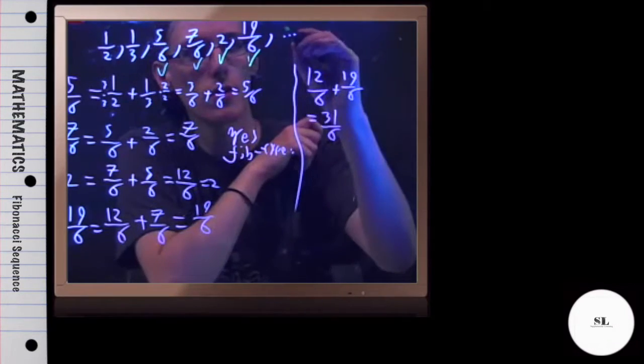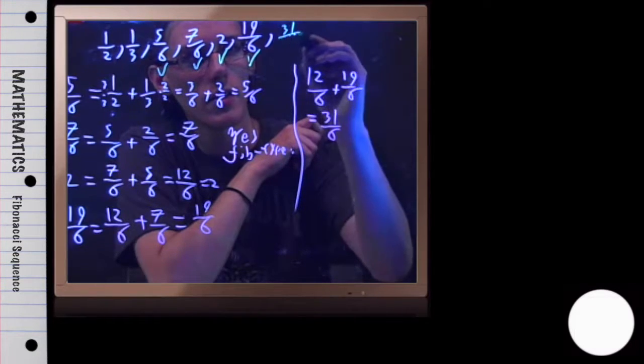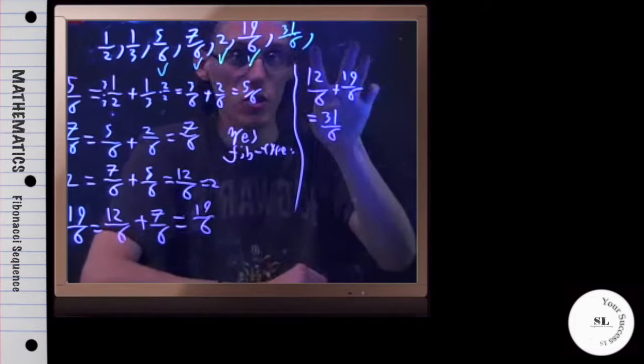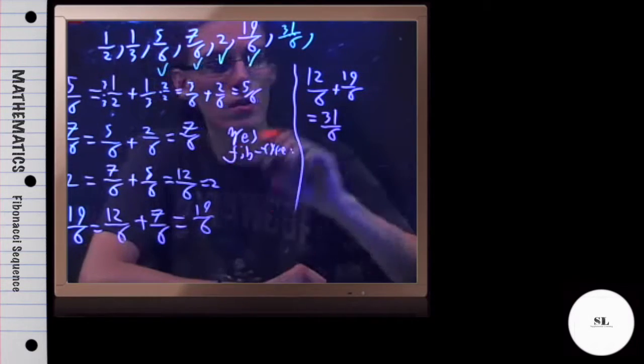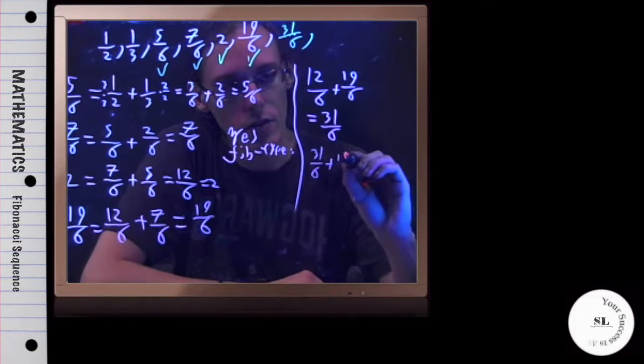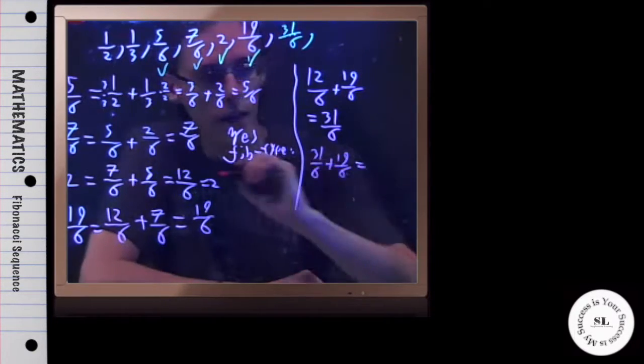So that's the next term. And I'll go ahead and put it right here. 31 over 6. Now the next term would be the sum of these two terms. So I'm going to have 31 over 6 plus 19 over 6. Add straight across.